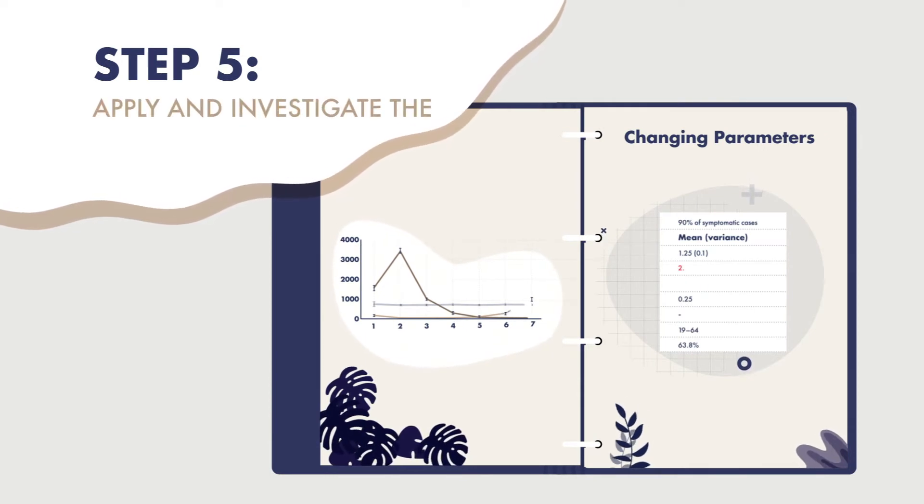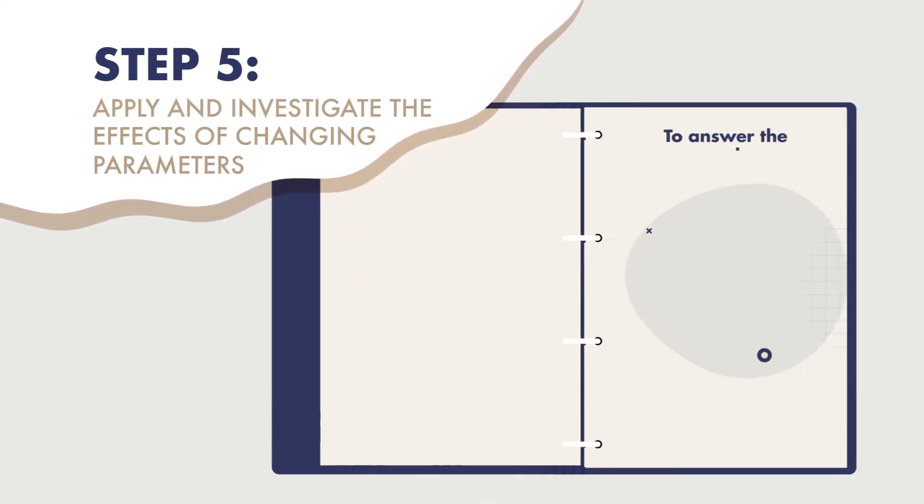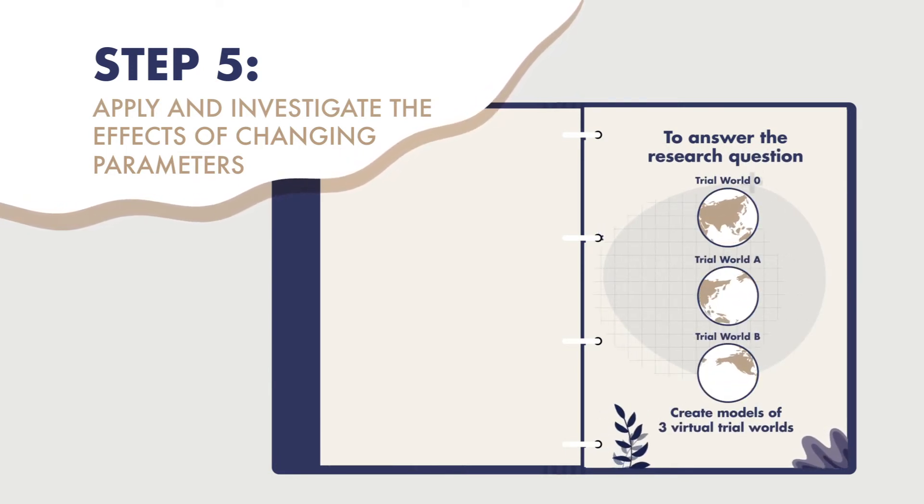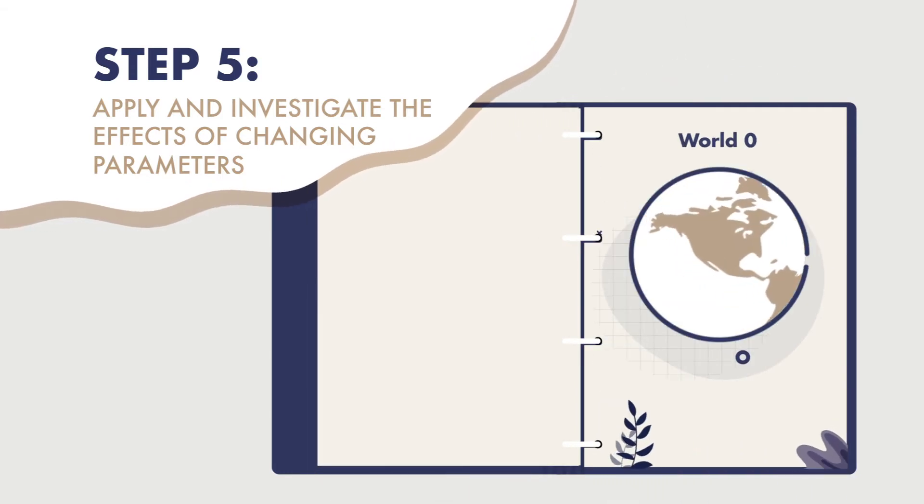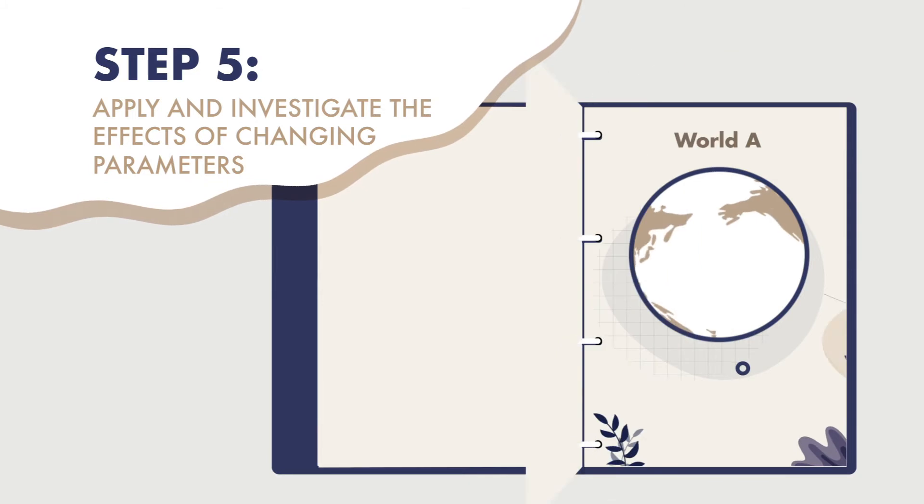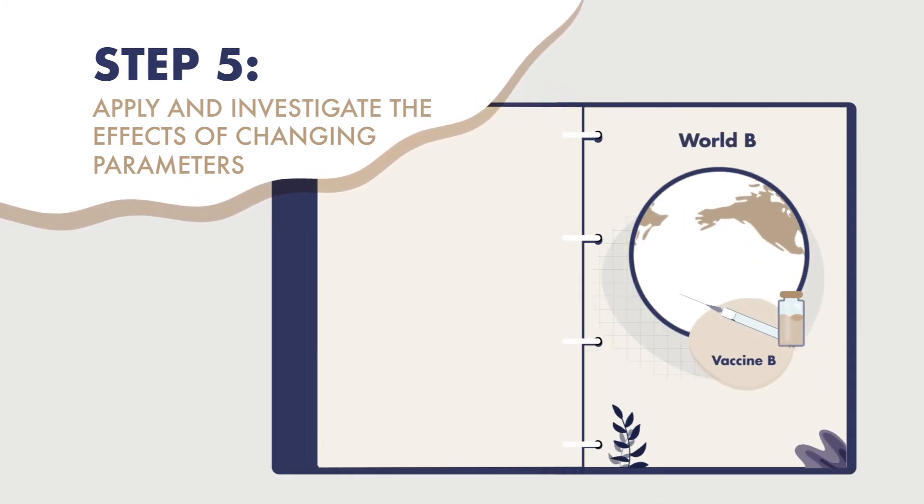Step 5: Apply and investigate the effects of changing parameters. To answer the research question, we create models of three virtual trial worlds for an elderly population. In World Zero, the base scenario, they receive no vaccine. In World A, they receive Vaccine A. And in World B, they receive Vaccine B.